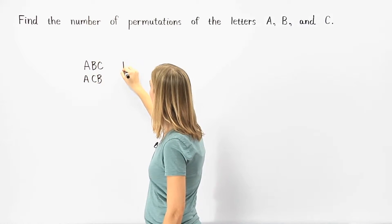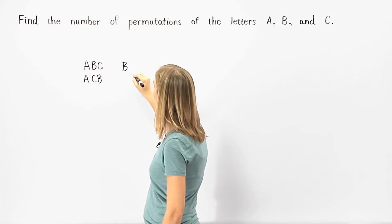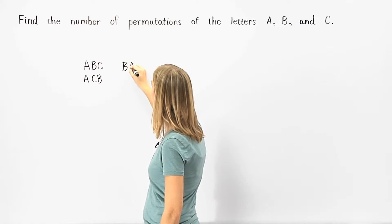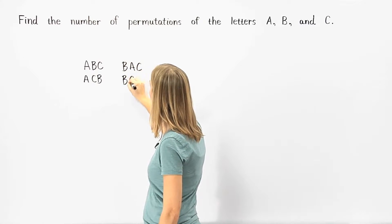If we start with the letter B, we can arrange the letters as B, A, C or B, C, A.